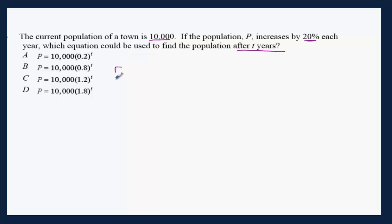Future value equals a times b to the power of x, where FV is the future value, a is the initial value